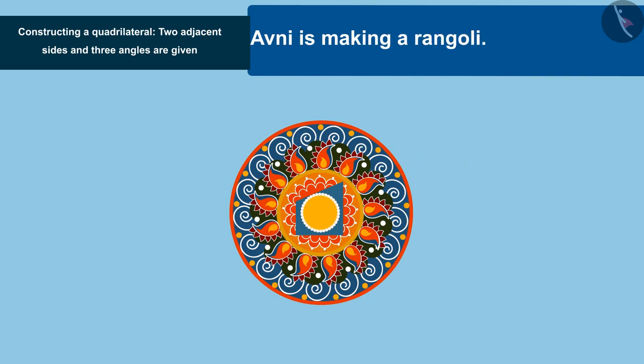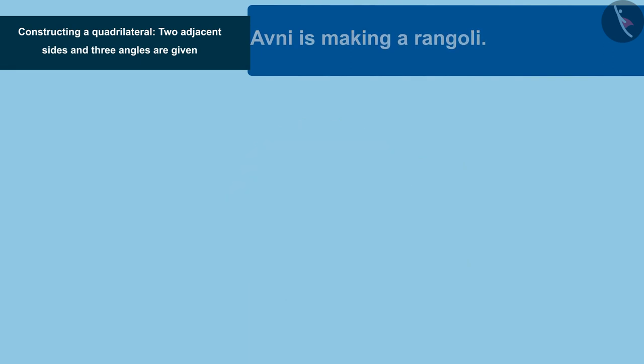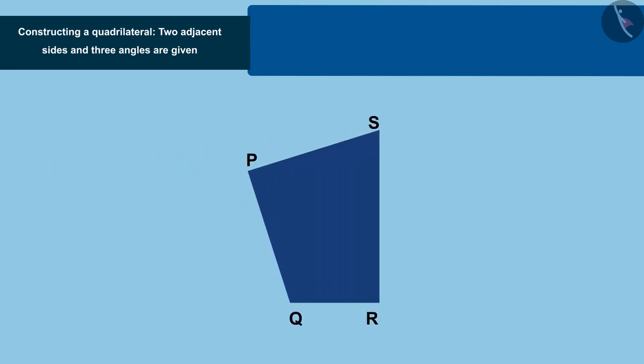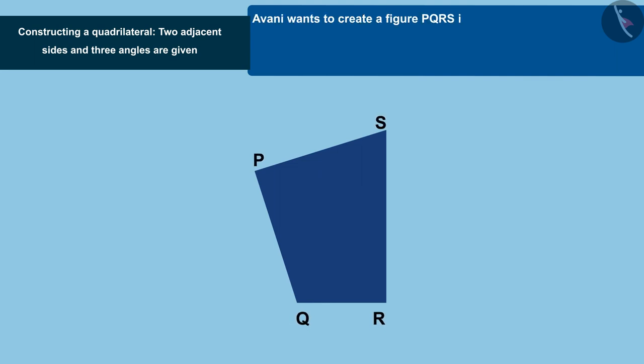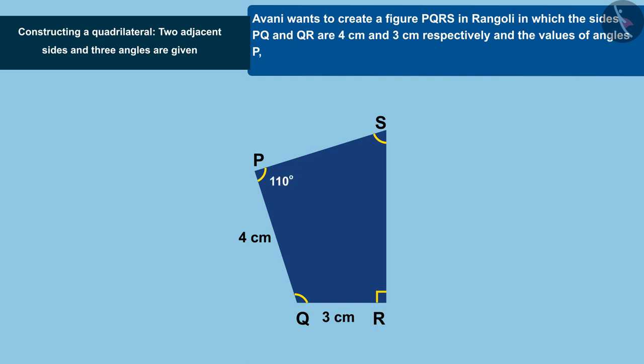Avni is making a rangoli. She wants to create a quadrilateral shaped figure in the rangoli in which the sides PQ and QR are 4cm and 3cm respectively and the values of angles P, Q, R are 110 degrees, 120 degrees and 90 degrees respectively. Can you help Avni in making quadrilateral PQRS?